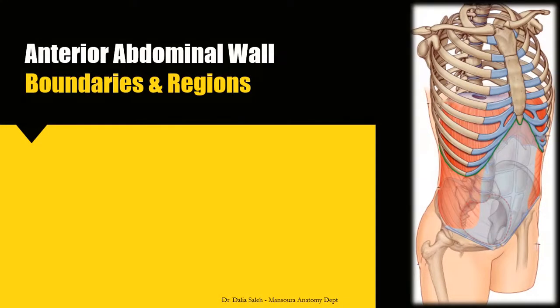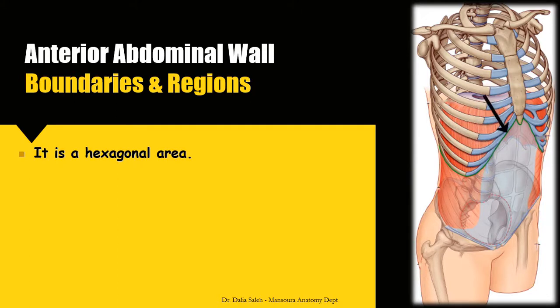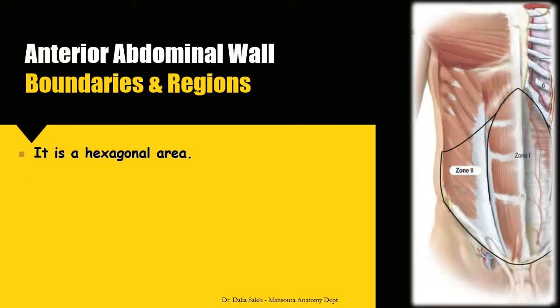The anterior abdominal wall is a hexagonal area limited superiorly by the costal margin and the xiphoid process, below by the inguinal ligaments and the pelvic bones, and on each side the mid-axillary lines. We can divide the anterior abdominal wall into two regions: median and anterolateral.